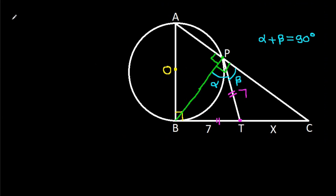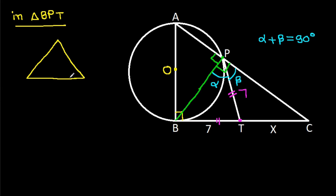Now, in triangle BPT, we have BT equal to PT, which is 7. That means these two angles will be equal, and since this angle is alpha, this angle will also be alpha — this angle will be alpha.